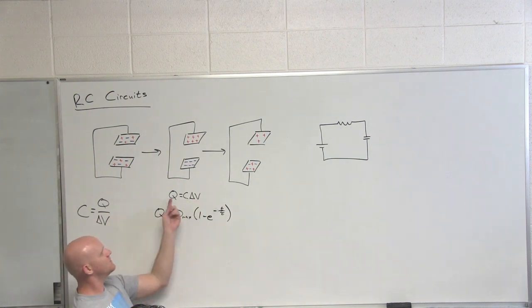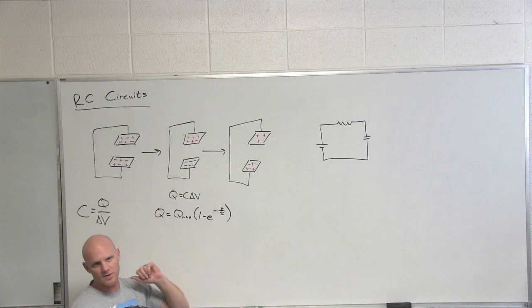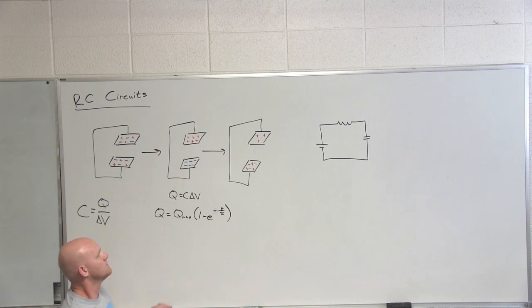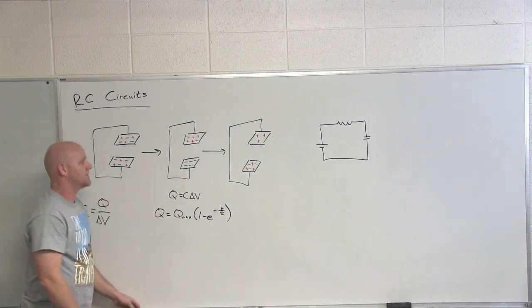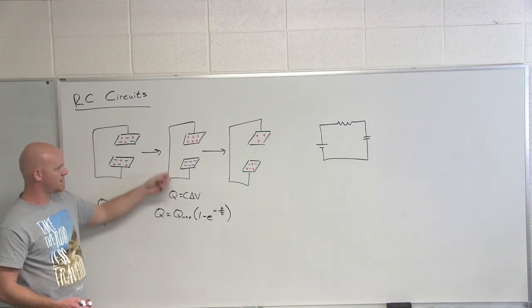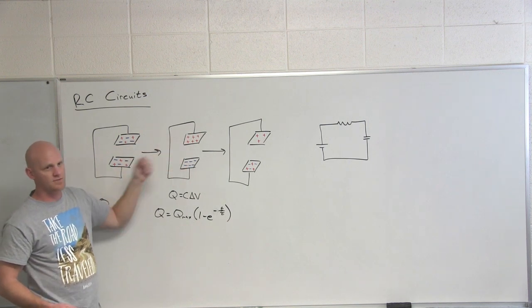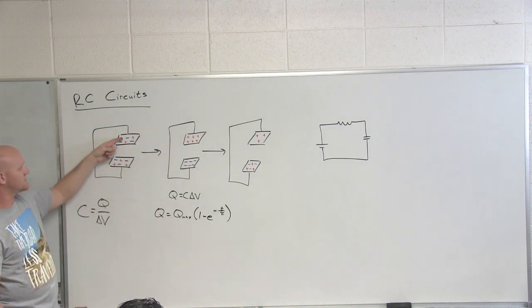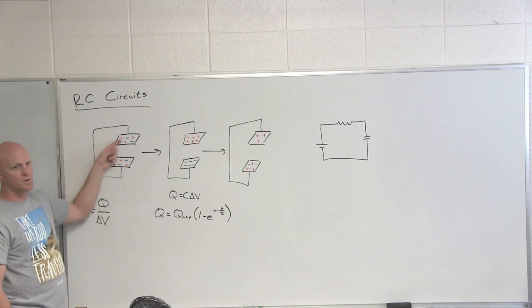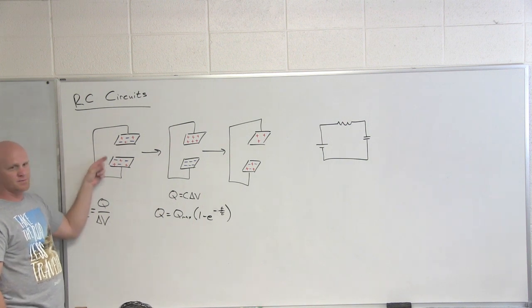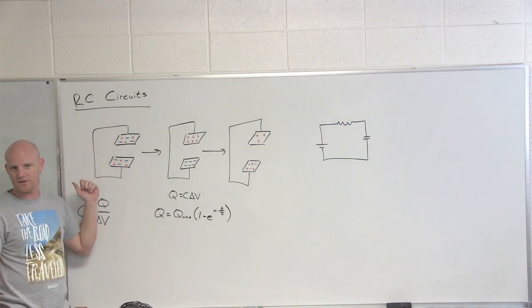Q max is just C delta V. And so when we said that Q equals C delta V, we mean that eventually, given enough time, you'll build up to a charge of C delta V on your capacitor. You're also going to reach your potential difference between the capacitors is going to change over time as well. If you look at the potential difference across your capacitor before it's charged, what is the potential difference between the two plates of a capacitor here? Zero.